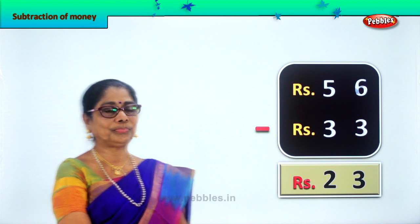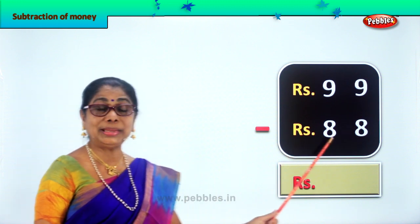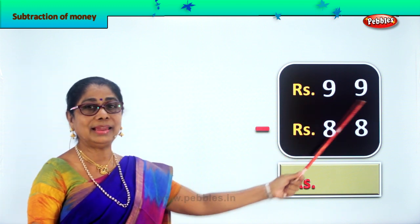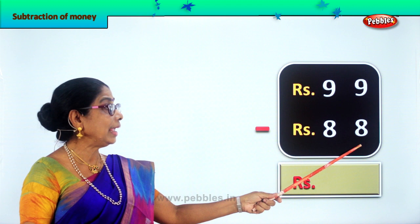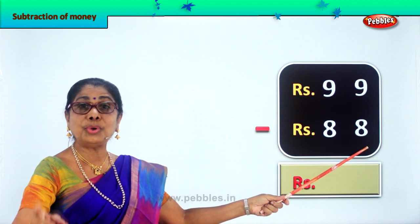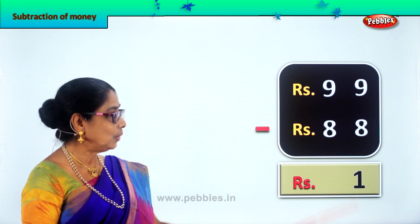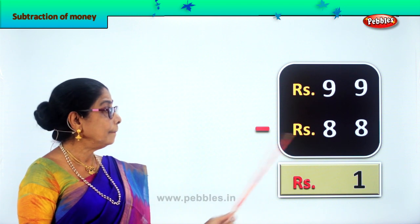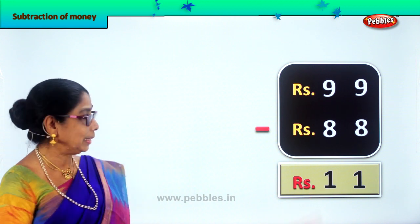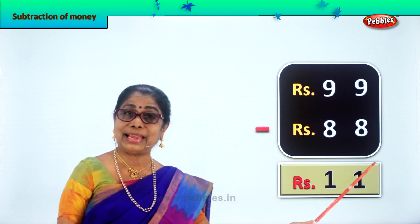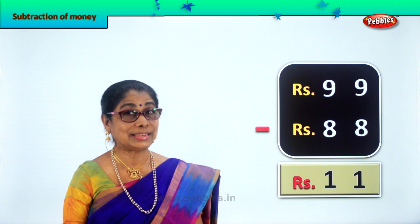Let's take another new sum. Rupees 99 minus rupees 88. In the ones place you have 9 minus 8, which gives you 1. In the tens place you have 9 minus 8 again — 9 take away 8 is 1. Rupees 99 minus rupees 88 is equal to rupees 11. Did you enjoy subtraction of money?